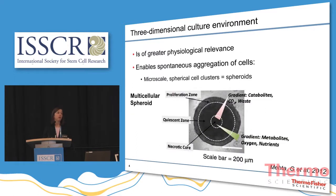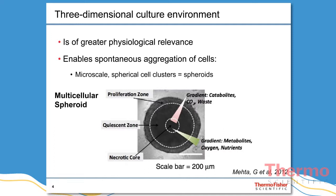In contrast, three-dimensional culture systems are of far greater physiological relevance, because they enable the spontaneous aggregation of cells into micro-scale spherical cell clusters, which we refer to as cell spheroids. Due to their multicellular arrangement, cell spheroids exhibit distinctive zones, as you can see in this image. The outermost layer is a zone of proliferative cells, with the highest concentration of oxygen and nutrients but the lowest concentration of metabolic base products. This is followed by the quiescent zone, a layer of dormant and non-dividing cells due to a shortage of oxygen and nutrients. Larger spheroids also have dead cells at their center, referred to as the necrotic core.